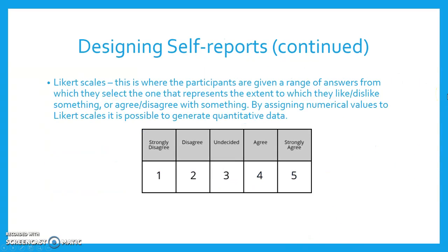Likert scales: this is where the participants are given a range of answers from which they select the one that represents the extent to which they like or dislike something, or agree or disagree with something. By assigning numerical values to Likert scales, it is possible to generate quantitative data. Here is a little example of what they look like.